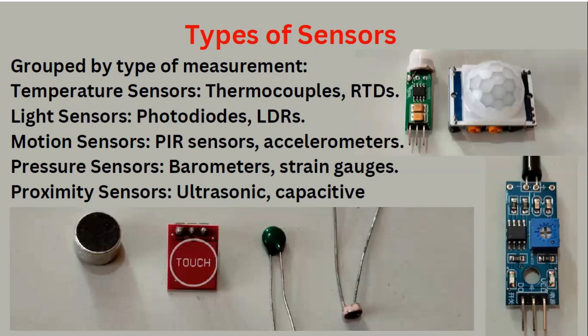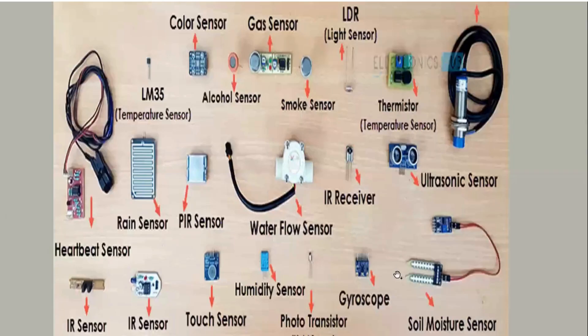Then you have proximity sensors — we'll do practicals based on proximity sensors. They are basically categorized into two types: ultrasonic and capacitive. Ultrasonic is one type based on sound, and capacitive is a different sensor type based on capacitance. On the bottom side, you can see sensors for microphone, touch, thermal, and LDR.